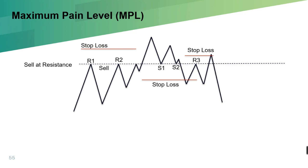This line is called the Maximum Pain Level. One reason is that big banks and big traders can see your pending orders and stop losses — not your individual trade specifically, but the majority of people's trade positions. That is what we call liquidity. The big banks will push the price to that area to hit your stop loss so that they can gain money. This line is the Maximum Pain Level.